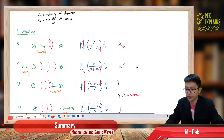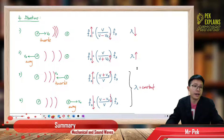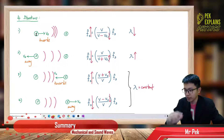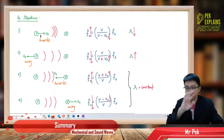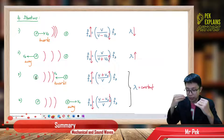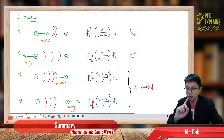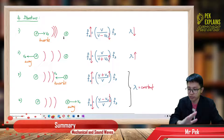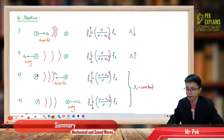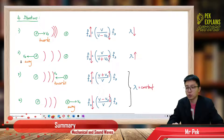There are four situations we need to take note of in the Doppler effect. In our syllabus, one of the parties must be stationary — either the observer is stationary or the source is stationary, so only one person is moving. The first two situations involve the source moving; the other two involve the observer moving.